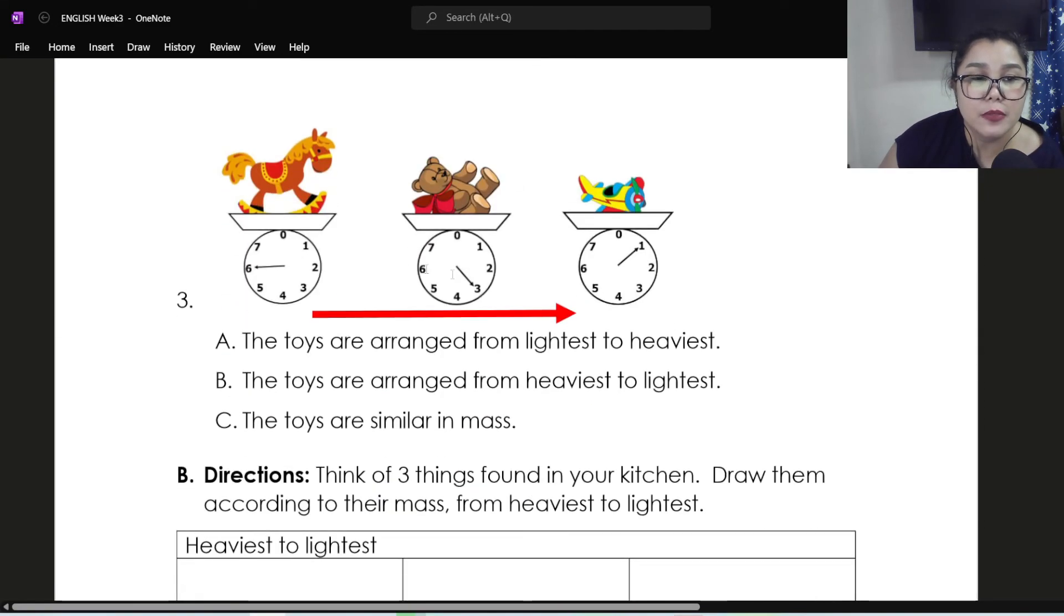Number three. We have here different toys: rocking horse, stuffed toy teddy bear, and a toy plane. And then there's a pointer showing the mass. So this rocking horse is six kilograms. Next one, stuffed toy teddy bear, is three. And then the toy airplane is one. And then look at the arrow. It's pointing from left going to your right. So what does it tell? A, the toys are arranged from lightest to heaviest. B, the toys are arranged from heaviest to lightest. C, the toys are similar in mass.